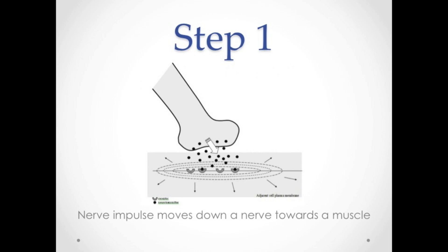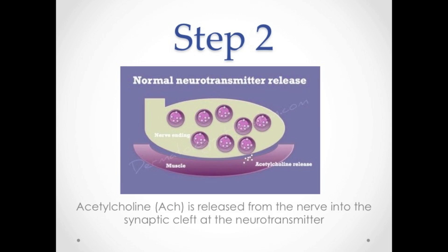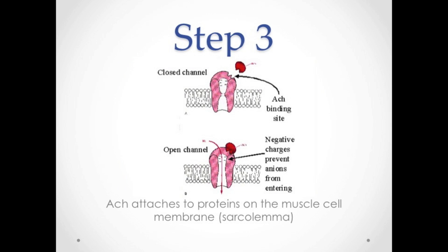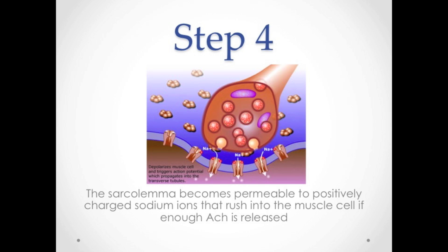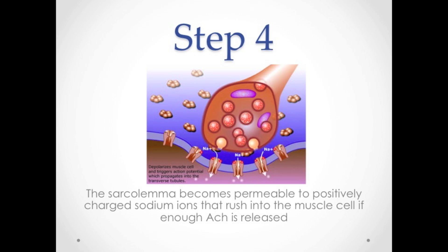First, the nerve impulse moves down a nerve towards a muscle. When the impulse reaches the nerve ending, it releases acetylcholine in the synaptic cleft. The acetylcholine, or simply ACH, attaches to the muscle cell membrane, opening a channel that allows sodium ions inside the cell itself. This step only occurs if enough ACH is released to allow sodium ions inside the muscle cell.